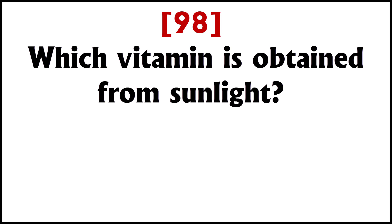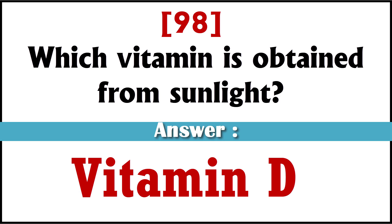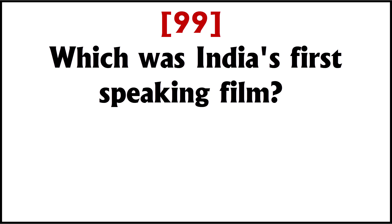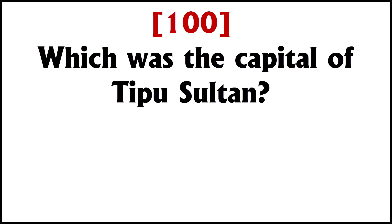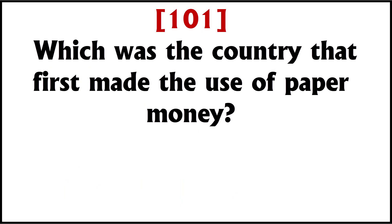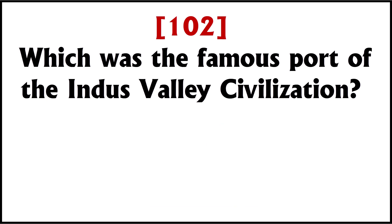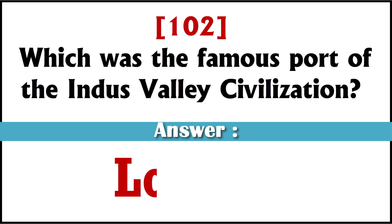Which vitamin is obtained from sunlight? Vitamin D. Which was India's first talking film? Alam Ara. Which was the capital of Tipu Sultan? Srirangapatna. Which was the country that first made use of paper money? China. Which was the famous port of the Indus Valley civilization? Lothal.